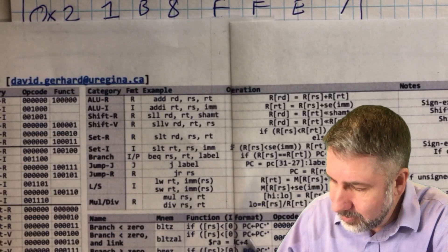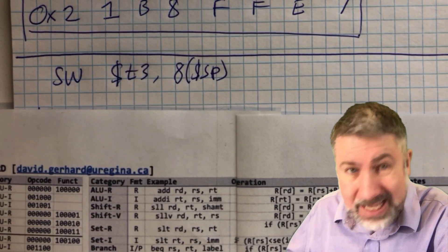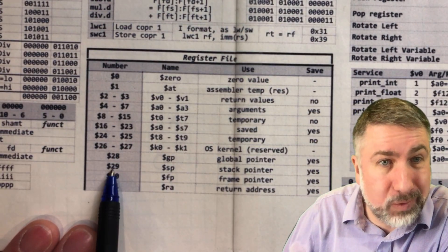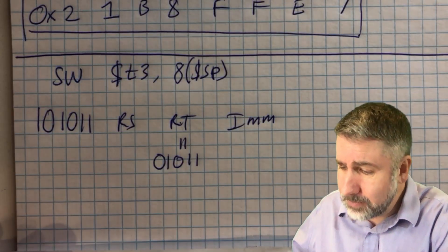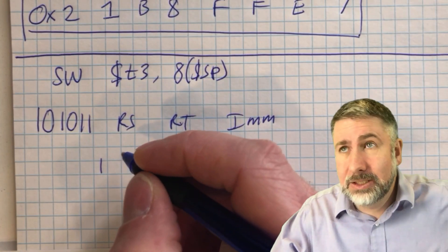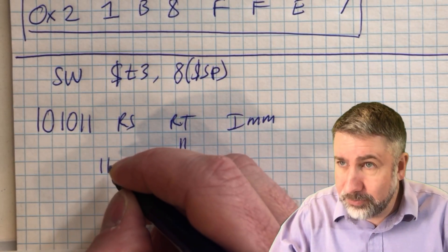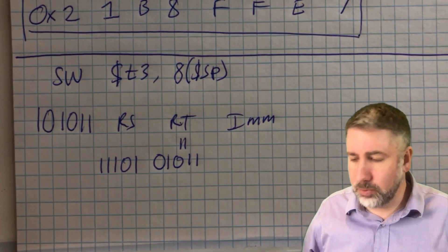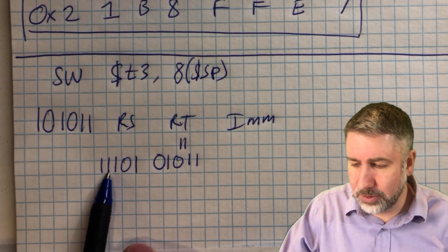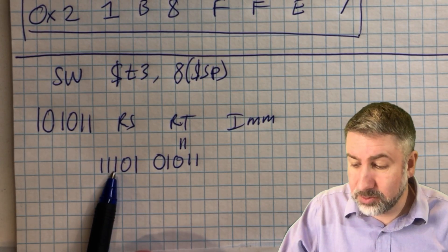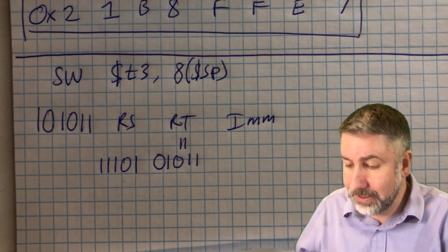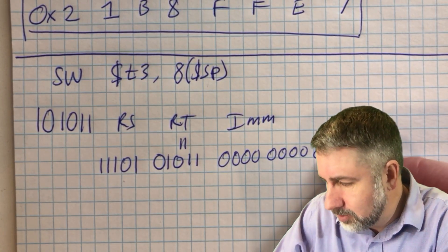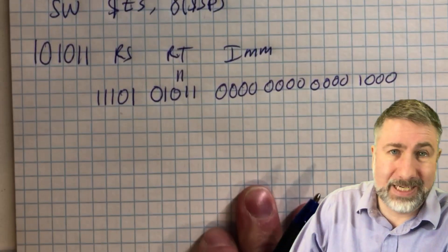RS is the address register, which is SP — the stack pointer. Looking in the register file, SP is register 29. Register 29 is 16+8+4+1 = 11101 in binary. Then the immediate value is just 8, which in 16 bits is 0000 0000 0000 1000. For any immediate instruction, the bottom four hex digits directly represent the number stored in the immediate field — if there are zeros in front, the value is just that number in hex.